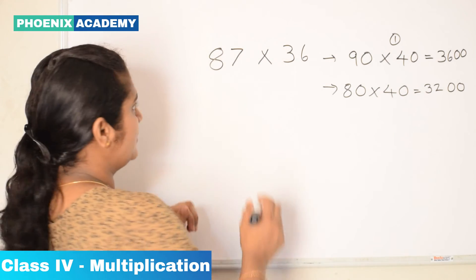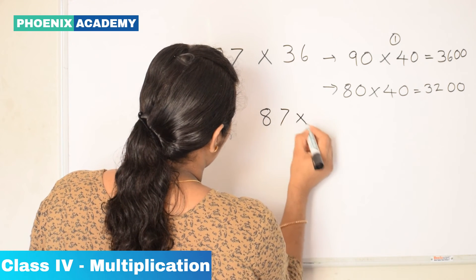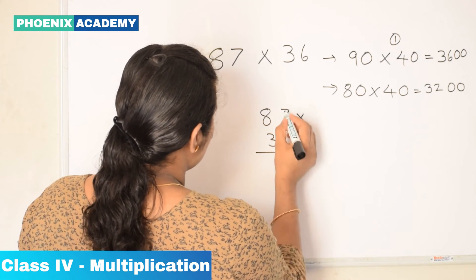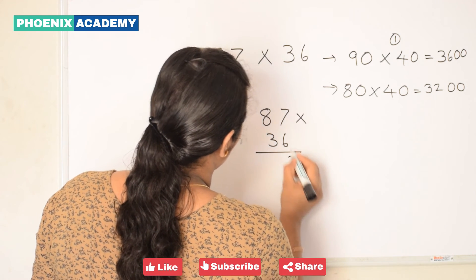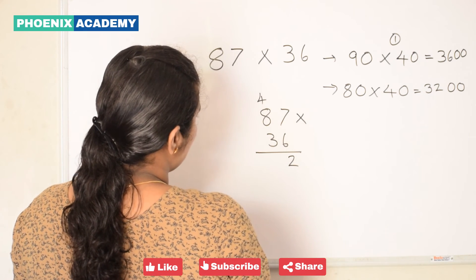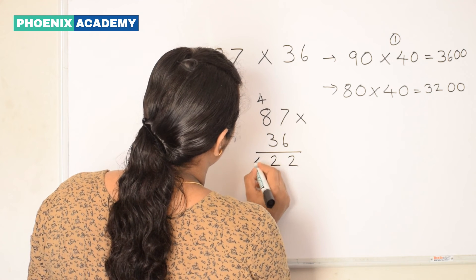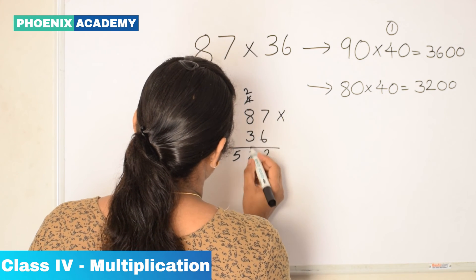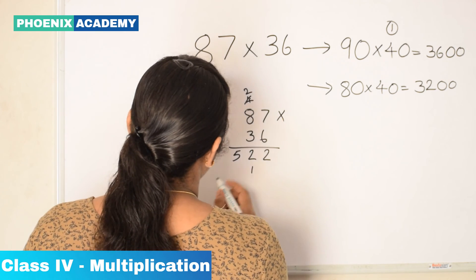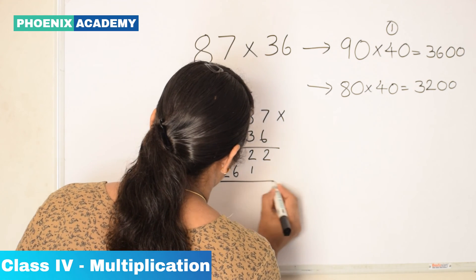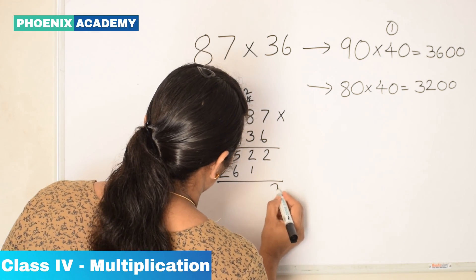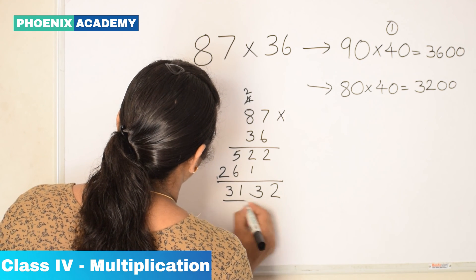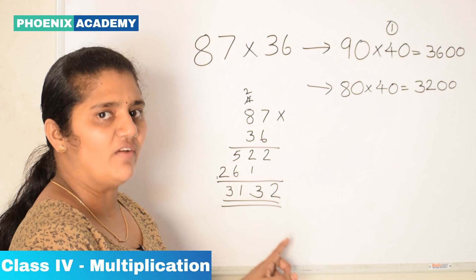Let's find out the actual product of 87 into 36. Multiply 6 with 87: 6 times 7 is 42, carry forward 4. 6 times 8 is 48, plus 4 is 52. Then multiply 3 with 87: 3 times 7 is 21, write 1, carry forward 2. 3 times 8 is 24, plus 2 is 26. Add the partial products: 2 plus 1 is 3, 5 plus 6 is 11, carry 1, 2 plus 1 is 3. So the actual product is 3,132.